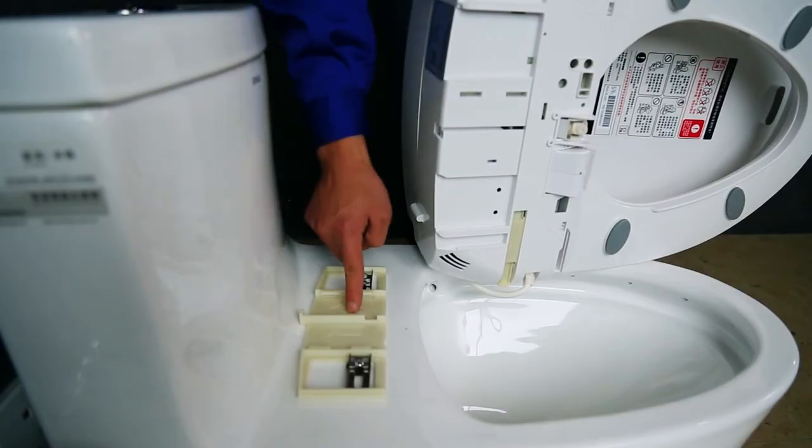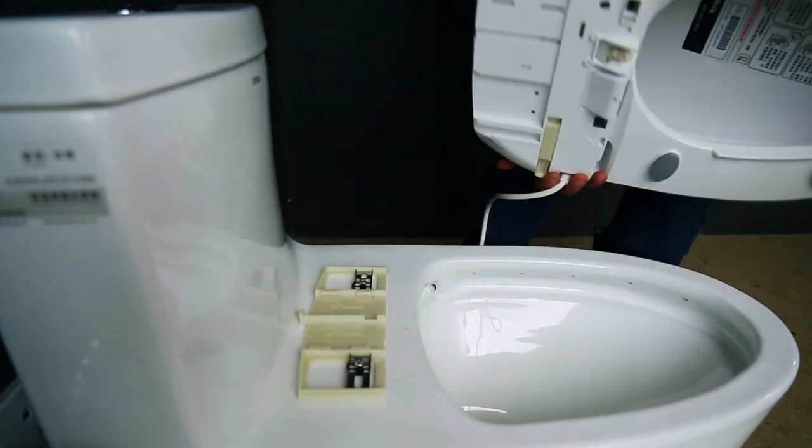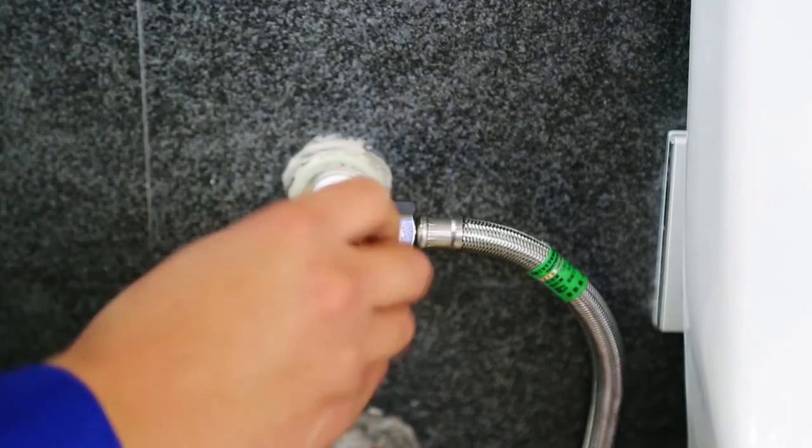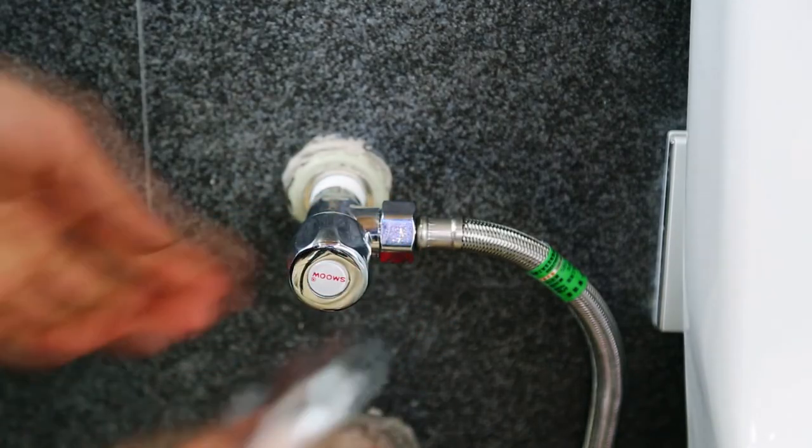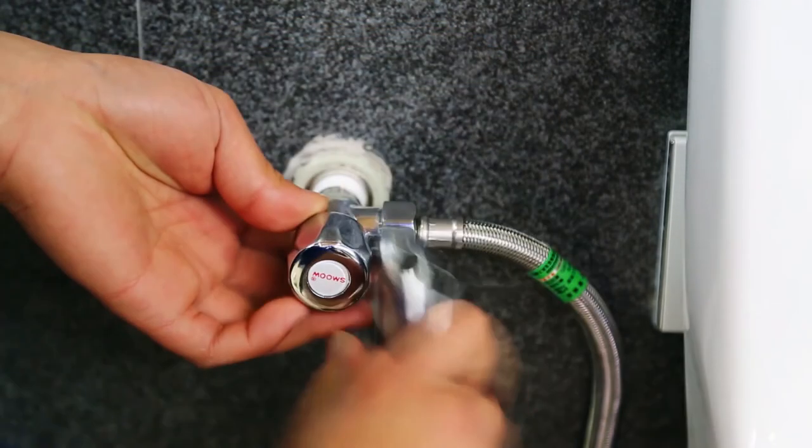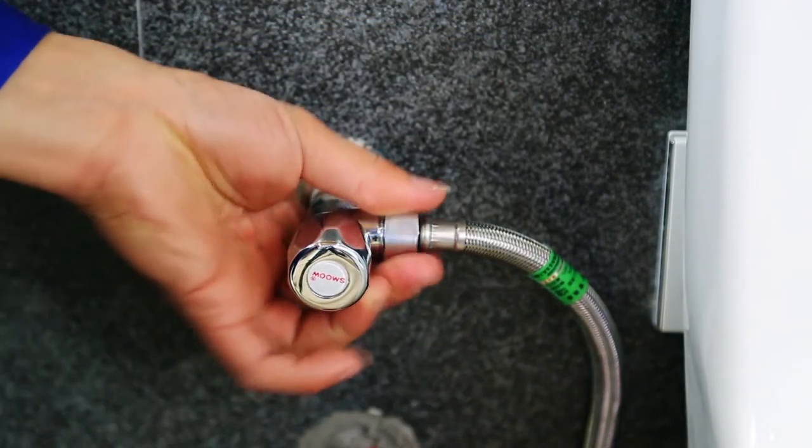Second step, aligning the convex to the concave along with the groove and raised guide rails. Slide the bidet into mounting bracket until it clicks into the right position. Turn off the water valve. Remove the existing water hoses.